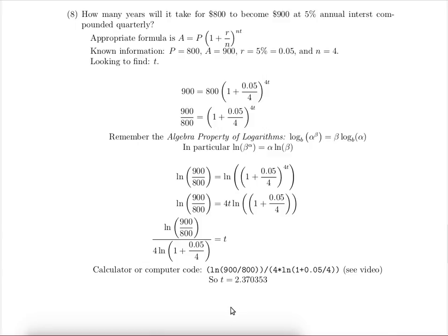Now because we're compounding quarterly and we're looking for a future value, we need to round that up to the nearest quarter. So this will be two and a half years. Our final answer is the time: two and a half years.